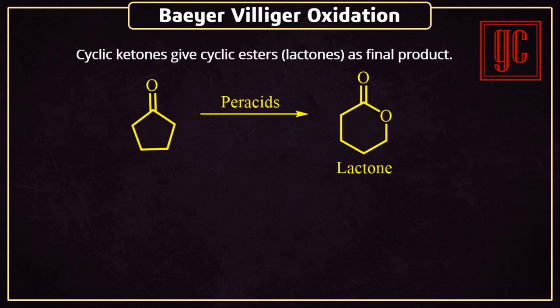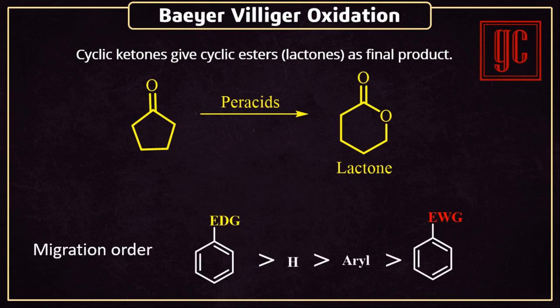Next is Bayer-Villiger oxidation in cyclic compounds. Cyclic ketones form cyclic esters as product. Next is migration order — this is the migration order of the alkyl groups. Electron-rich groups migrate first.